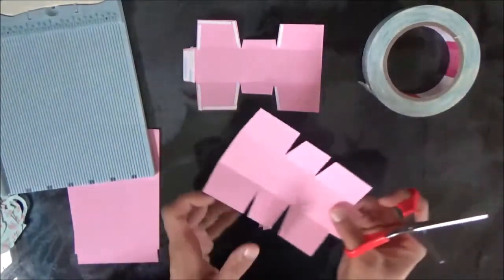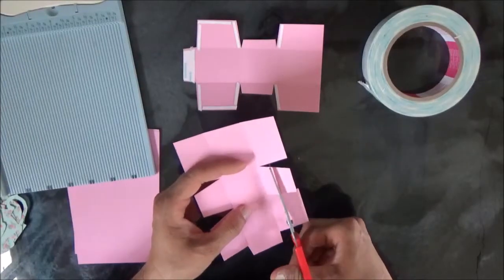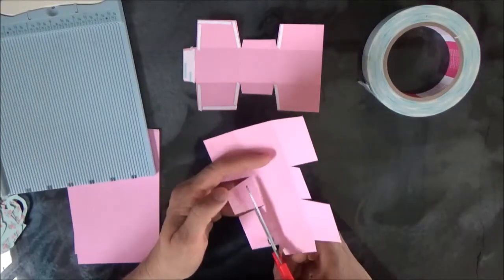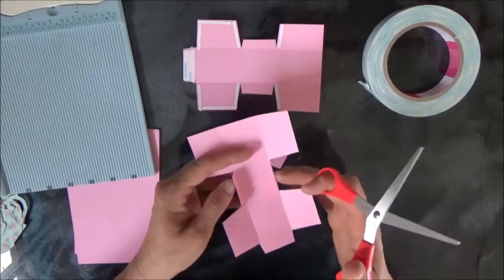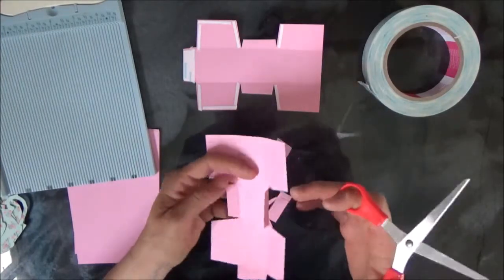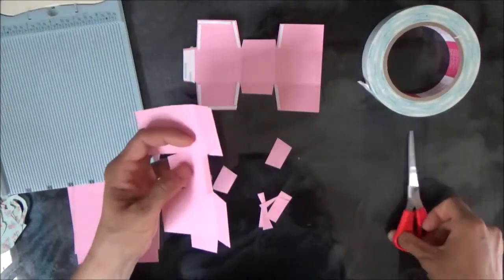Then what I did was the two middle pieces—I cut some of that off as well to cut down on some of the bulk. You don't have to measure, you just make sure that you leave enough to where we can adhere the other two sides.